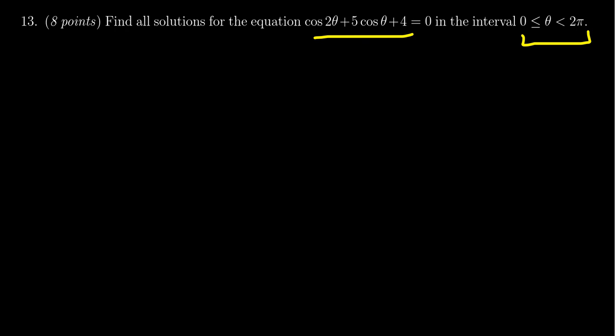Notice by the interval, we're looking for solutions that are in radians, and we need to solve this equation. We do have a mismatch of angles here. We have a cosine of theta and a cosine of 2 theta. So we probably need to use the double angle identity on cosine in order to get just thetas here.